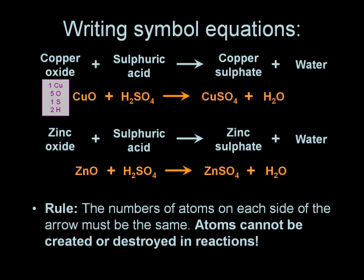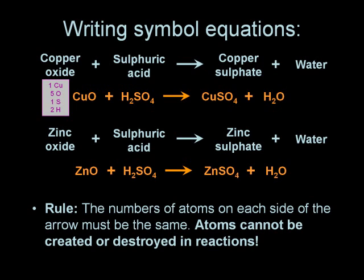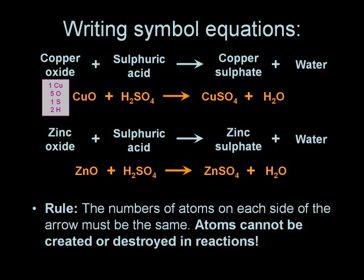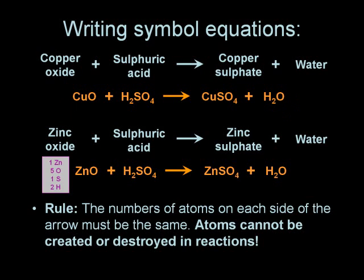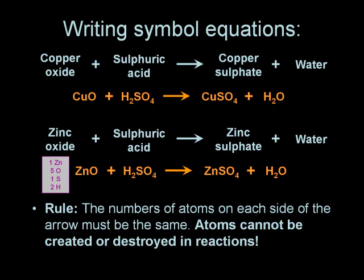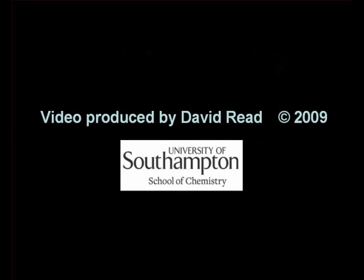You can see that we have one copper, five oxygens, one sulphur and two hydrogens. Similarly, on the right hand side, if you count carefully you can see we have the same numbers. In the case of zinc oxide, if you look on the left hand side and count the atoms on the right hand side, you can see that these numbers are once again the same.